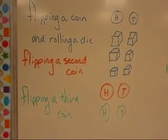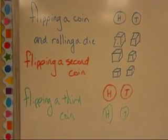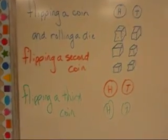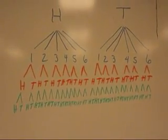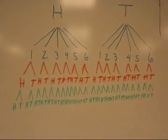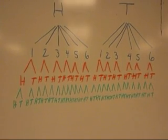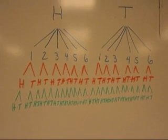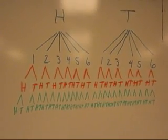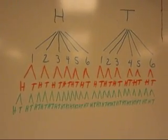And lastly, let's add flipping a third coin. That means off of each of my last red branches, I need, because a coin has two sides, two more branches. And again, I consistently go from left to right: heads, tails, heads, tails, and so on.